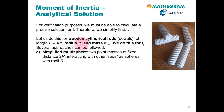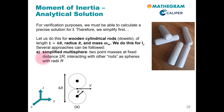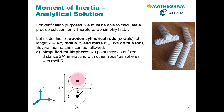We will now calculate this moment of inertia analytically for several approaches. The first one is a simplified multisphere approach. Here we assume that we have two point masses at a fixed distance of r, interacting with other rods via these spheres of radius R. So we use a very rough multisphere approach, and in addition we assume that the mass is concentrated at the centers of these spheres. You will see that this makes a big difference when we calculate the moment of inertia.